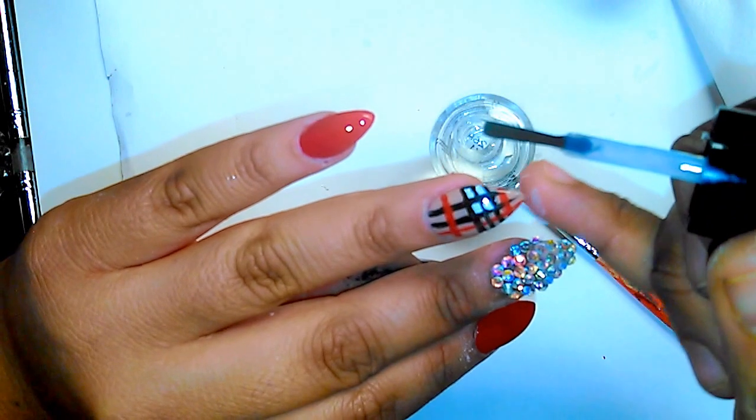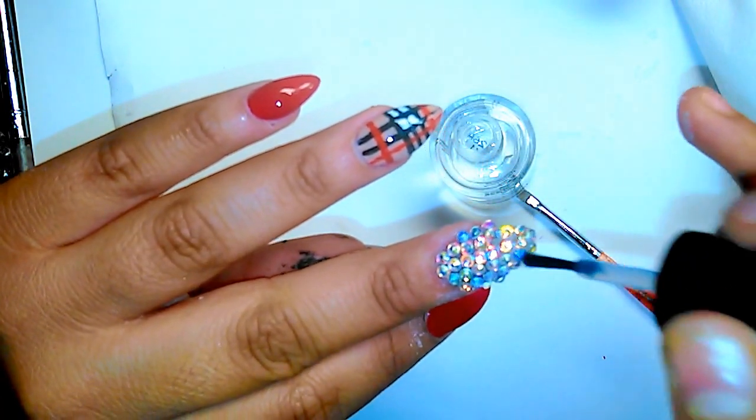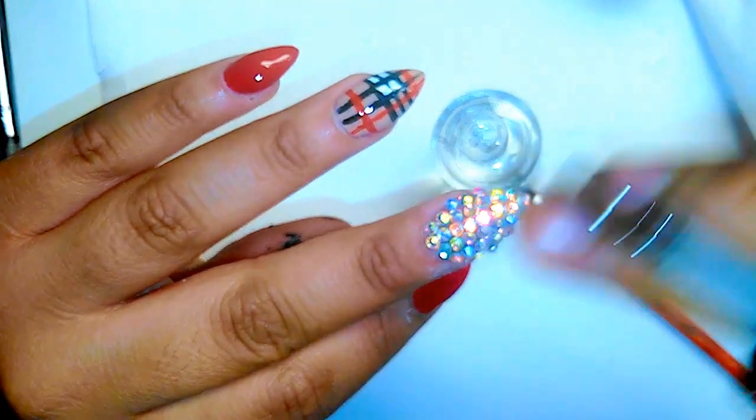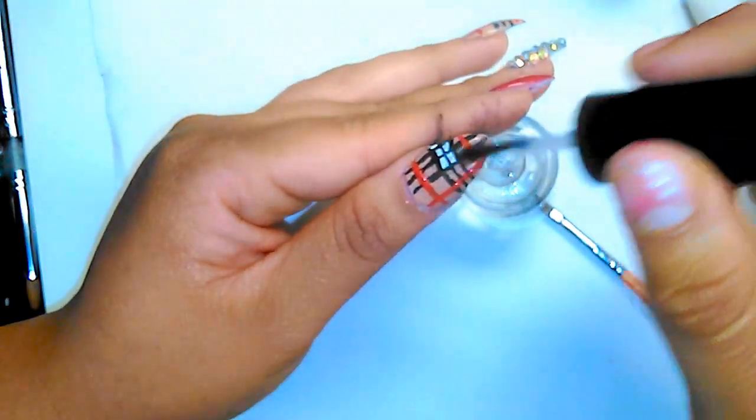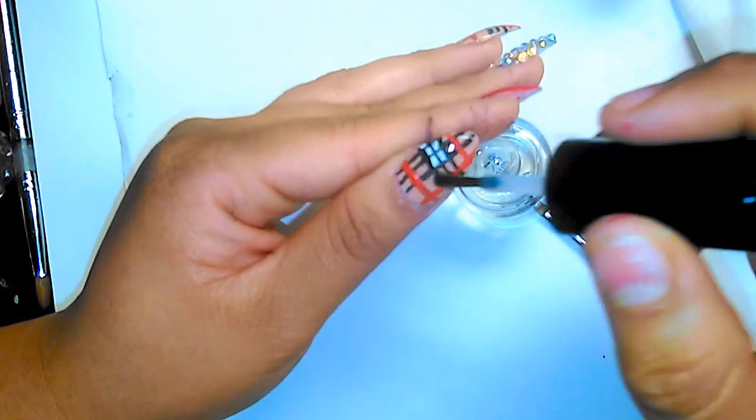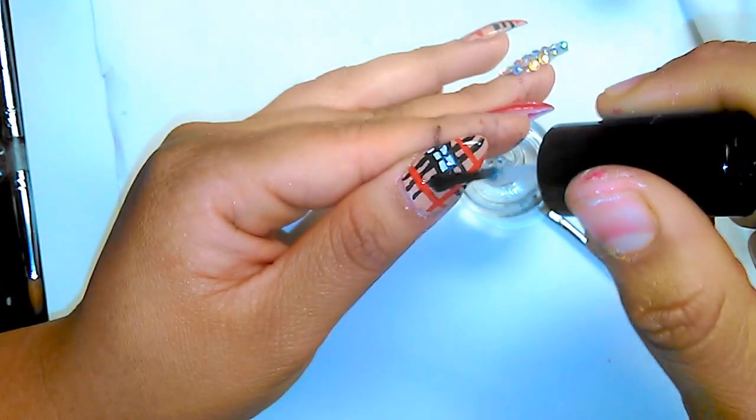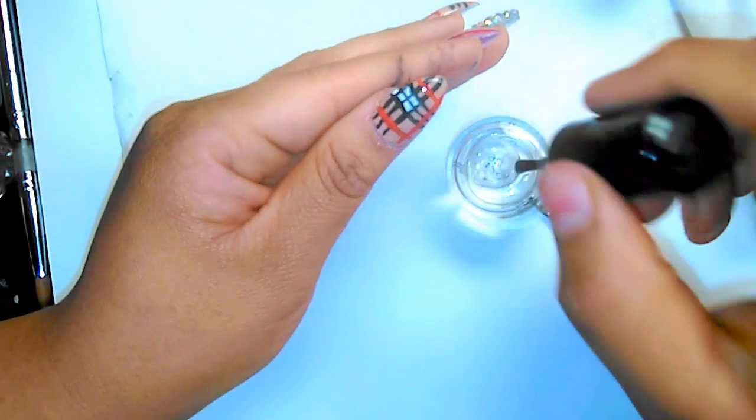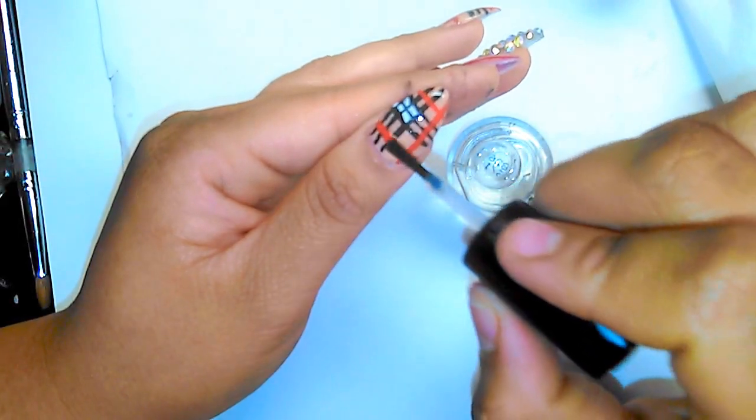And then all I did was added the Seche Vite top coat. Here I'm going over my rhinestones with some of the Seche Vite top coat, because whenever I apply the rhinestones, it kind of gets patchy from the glue. So I just want to make my rhinestones look shinier. When you do work with acrylic paint, you want to make sure you do two layers of top coat. That way it'll last. And this top coat really does last.